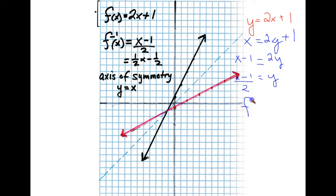So f inverse is equal to this. But I'm going to write this in slope-intercept form. So it would be one-half x minus one-half. I just separated these. I wanted you to see where it came from.